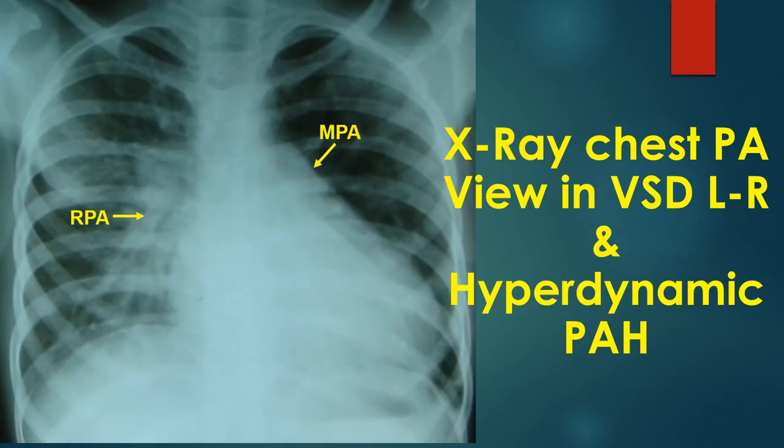Chest X-ray PA view in a VSD with left to right shunt and hyperdynamic pulmonary hypertension shows cardiomegaly, prominent main pulmonary artery segment, and right pulmonary artery. Enlarged left pulmonary artery shadow is seen below the left cardiac border within the cardiac silhouette. Enhanced vascular markings are visible on the right side, whereas they are obscured by the cardiac shadow on the left side.